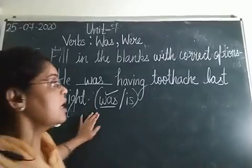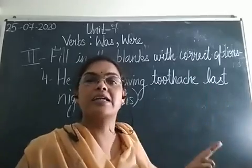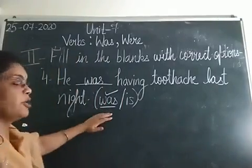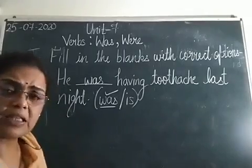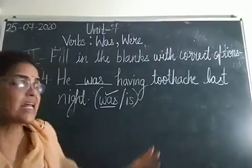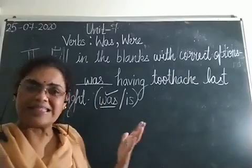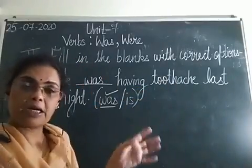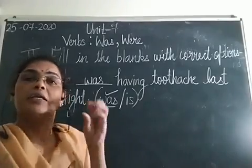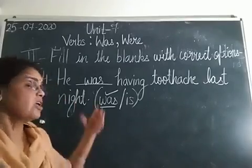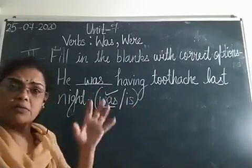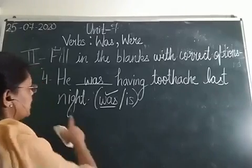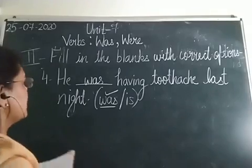'Is' is used with present tense and 'was' is used with past tense. With 'he,' 'she,' 'it,' both 'is' and 'was' can appear, but we check the time. Key words like 'yesterday,' 'last night,' and 'ago' tell us the time has already passed, so we use past tense. He was having toothache last night.